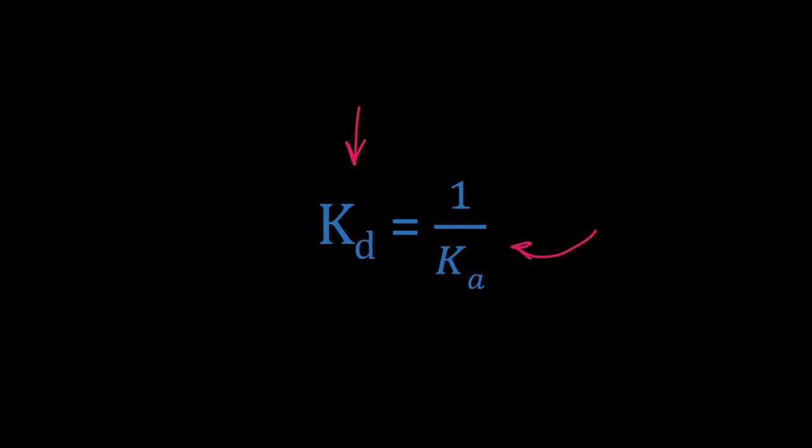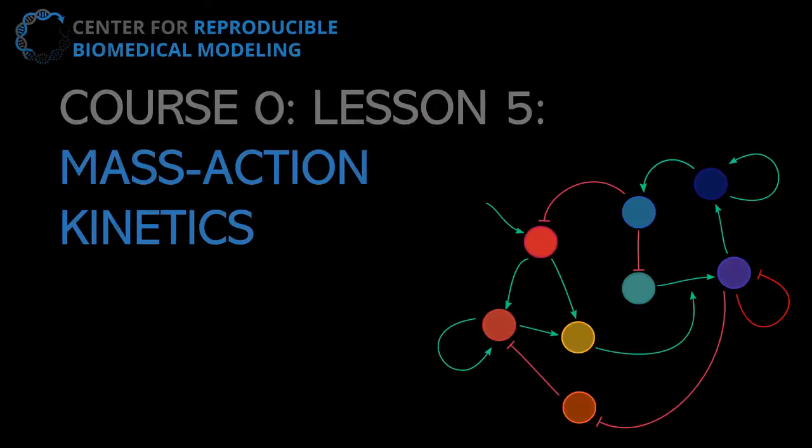That concludes lesson 5 on mass action kinetics. We've discussed how to construct a rate law using mass action — typically used for elementary reactions — and we've also gone over some aspects of chemical equilibrium and the equilibrium constant. Hopefully you now have a better idea of how to represent reaction rates.